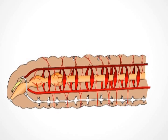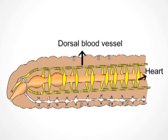In earthworm, red blood corpuscles are absent in the blood, but the blood is red in color due to the presence of hemoglobin dissolved in the plasma. Blood corpuscles are present which function as phagocytes, similar to white blood corpuscles of higher animals.